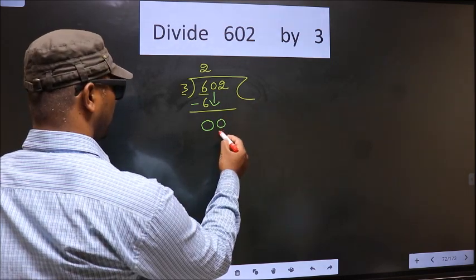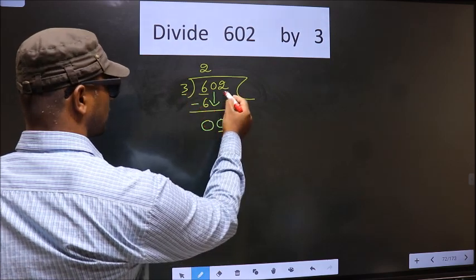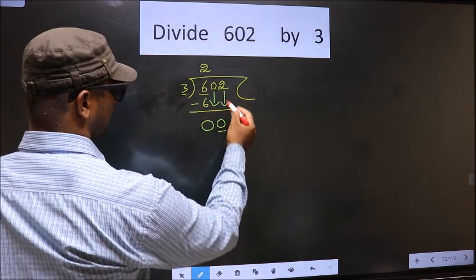Now here we have 0 and here 3. 0 is smaller than 3, so we should bring down the other number, 2, down.